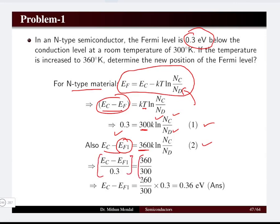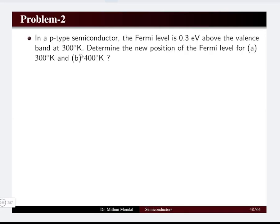Dividing the second equation by the first, we find Ec − Ef1 = 0.36 electron volts, which is the new Fermi level position. Before, the Fermi level was 0.3 eV below the conduction band at 300 K; now at 360 K, it is 0.36 eV below the conduction band.